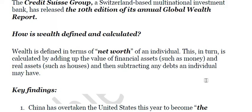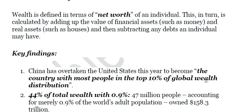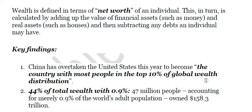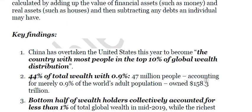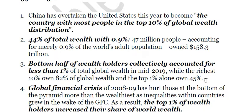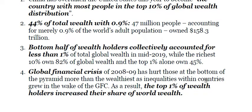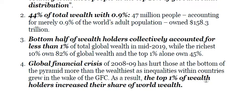Wealth is defined in terms of net worth, which is calculated by adding financial assets and real property assets and then subtracting any debts the individual may have. Key findings are that China has replaced the US with the most people in the top 10% bracket of global wealth distribution. 44% of the total wealth of the earth is held by 0.9% of people — just 47 million people — who own $158.3 trillion. The bottom half of wealth holders collectively accounted for less than 1% of global wealth.